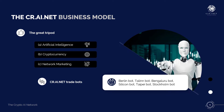CrayNet boasts six unique trading bots, all with a proven track record of success, codenamed according to the cities of their original developers: A. Berlin bot, B. Tallinn bot, C. Bengaluru bot, D. Silicon bot, E. Taipei bot, F. Stockholm bot. The Berlin bot has a maximum trading capacity of $5 million. The Tallinn bot: $19 million. The Bengaluru bot: $13 million. The Silicon bot: $44 million. The Taipei bot: $7 million. The Stockholm bot: $337 million. This puts the total trading capacity of all CrayNet's trading bots at $500 million.